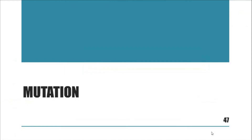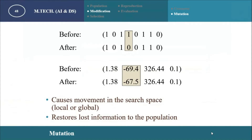Mutation is actually a local search process. In global search, we search the entire search space checking for better solutions. But in the case of mutation, it is a local search operation — we search only in nearby areas, making very small changes to chromosomes and checking whether the newly obtained chromosome is better than the previous one.